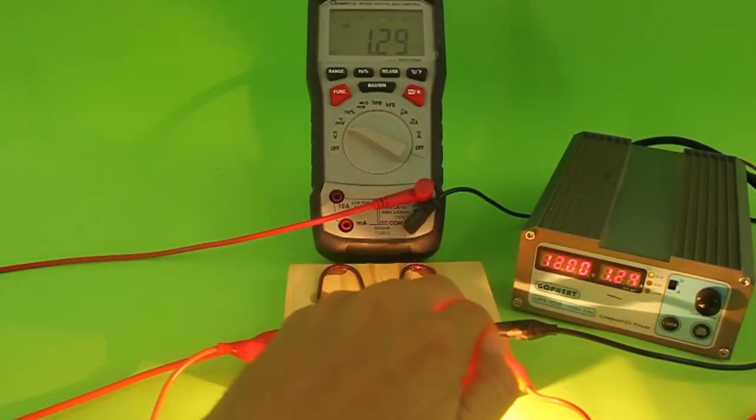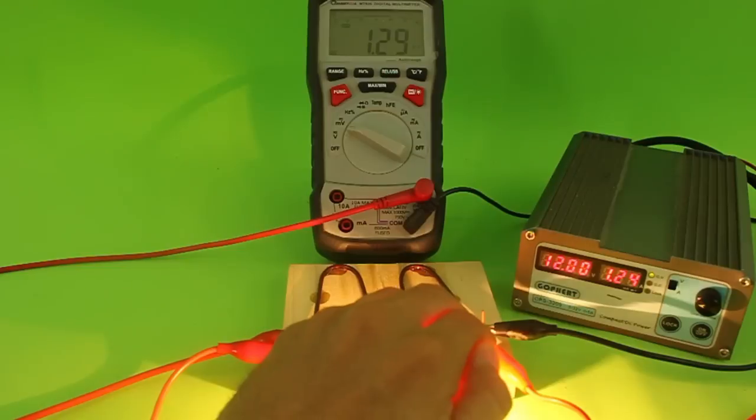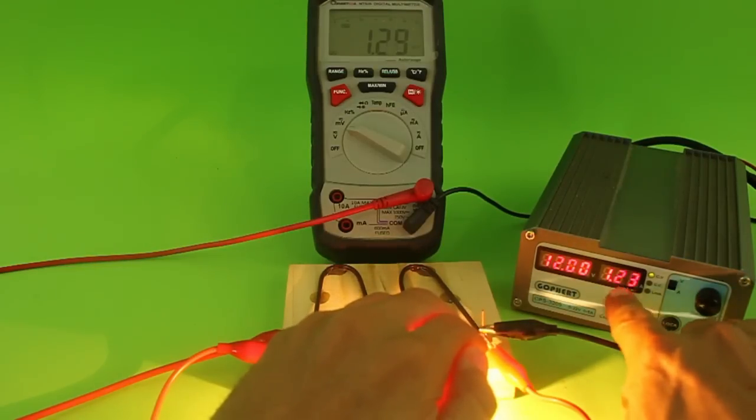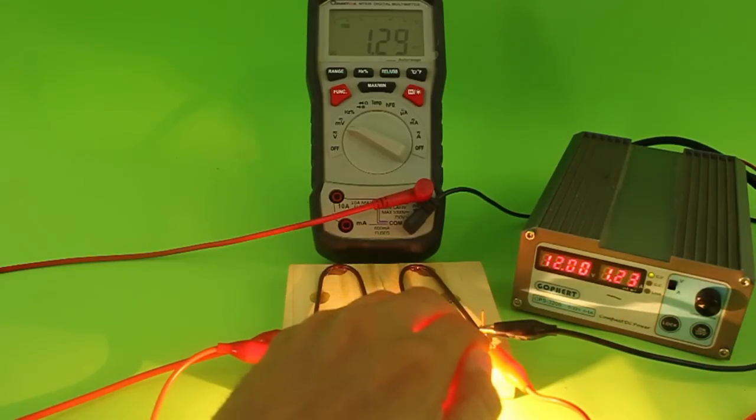We have a reading of 1.9130 millivolts that corresponds to a value of 1.29 amps. We can see that the power supply is giving a reading of 1.23 amps. A little bit different.